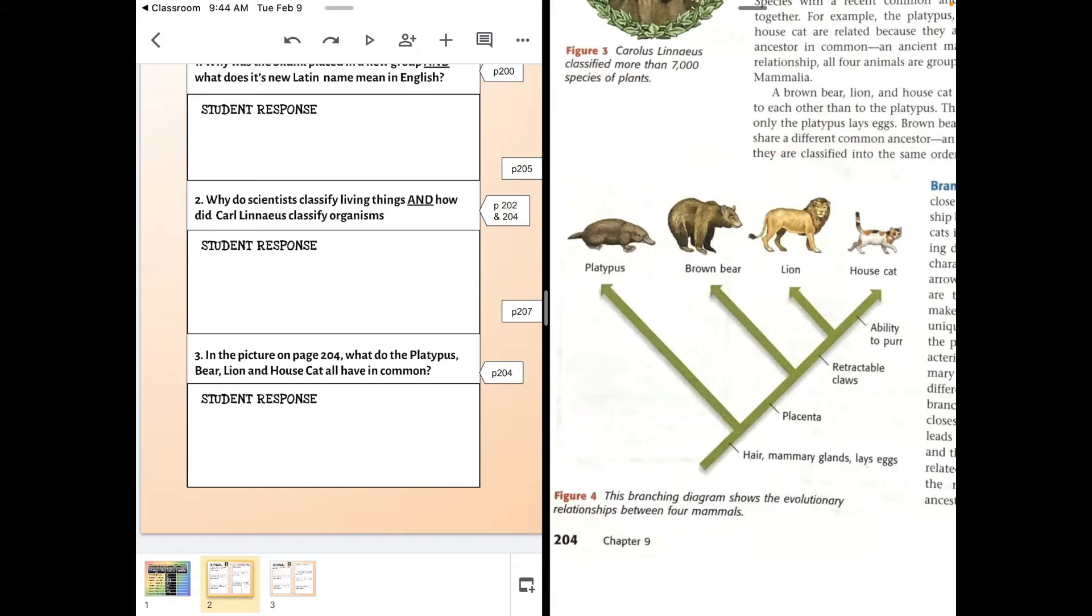So this is one way to show evolutionary relationships and classification, with a diagram like this.